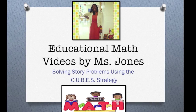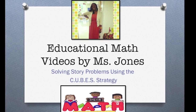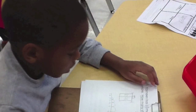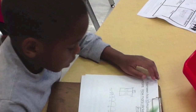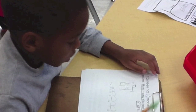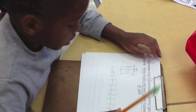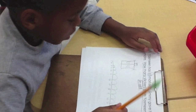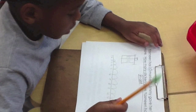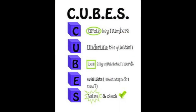Hi! My name is Miss Jones and I want to talk to you about using the cube strategy when solving story problems in math. So what is the cube strategy you ask? Well, C in cube stands for circle the key numbers. If they are written in word form, write the standard form above the words.